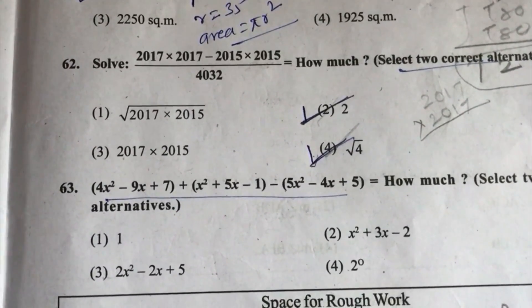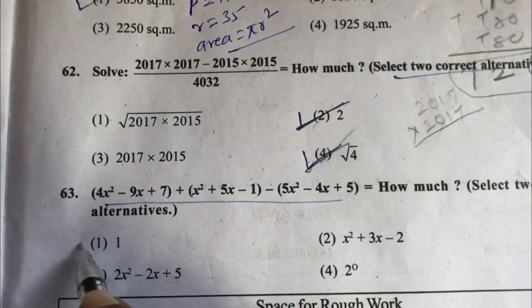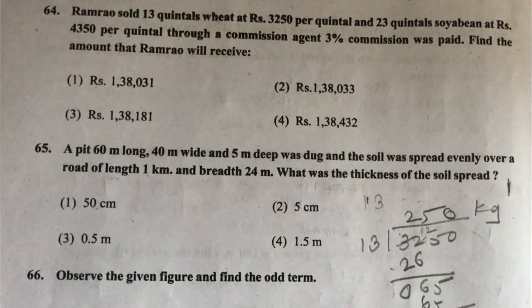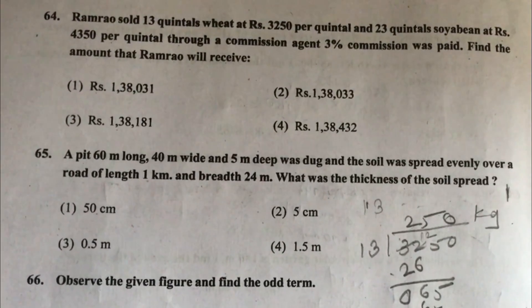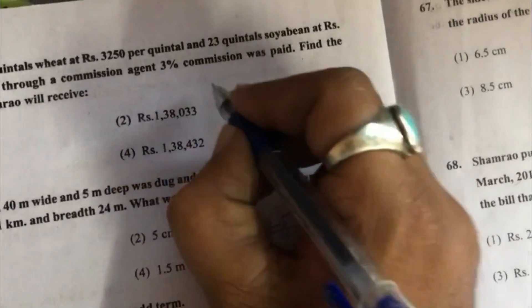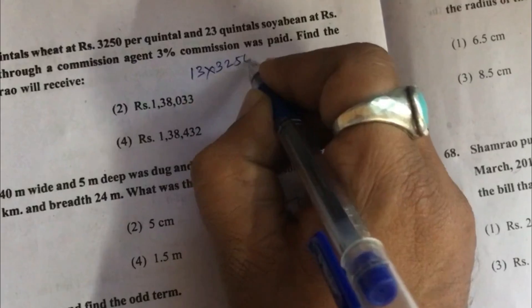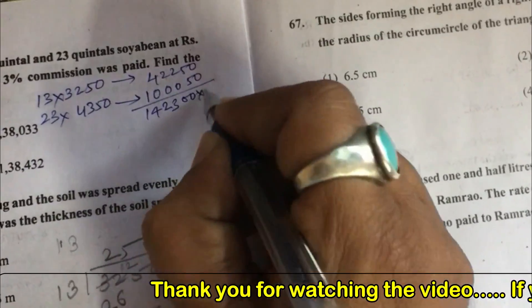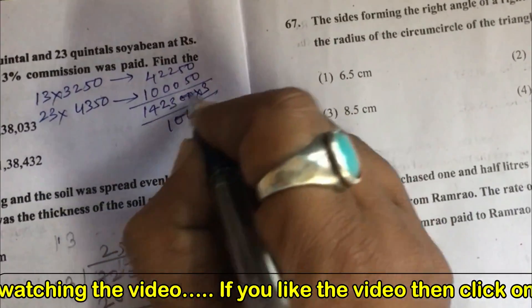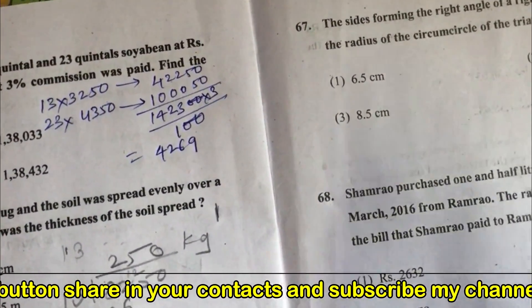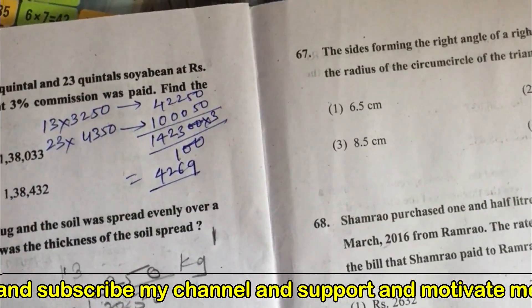Question 63: Solve this complete brackets. We will get answer as 1, so option 1 and 2 raise to 0. Question 64: Rama Rao sold 13 quintals wheat at 3250 per quintal and 23 quintal soybean at 4350 per quintal through a commission agent. 3% commission was paid. Find the amount that Rama Rao will receive. We have to multiply 13 into 3250, then 23 into 4350, and calculate 3% commission. We have to subtract this from the total purchases, so answer is option 1.